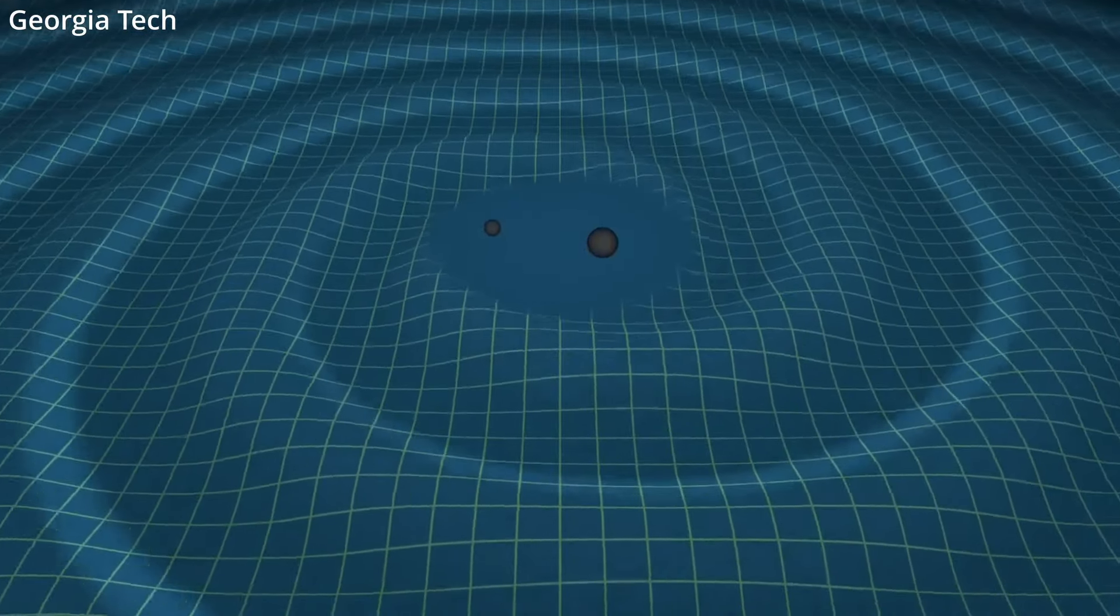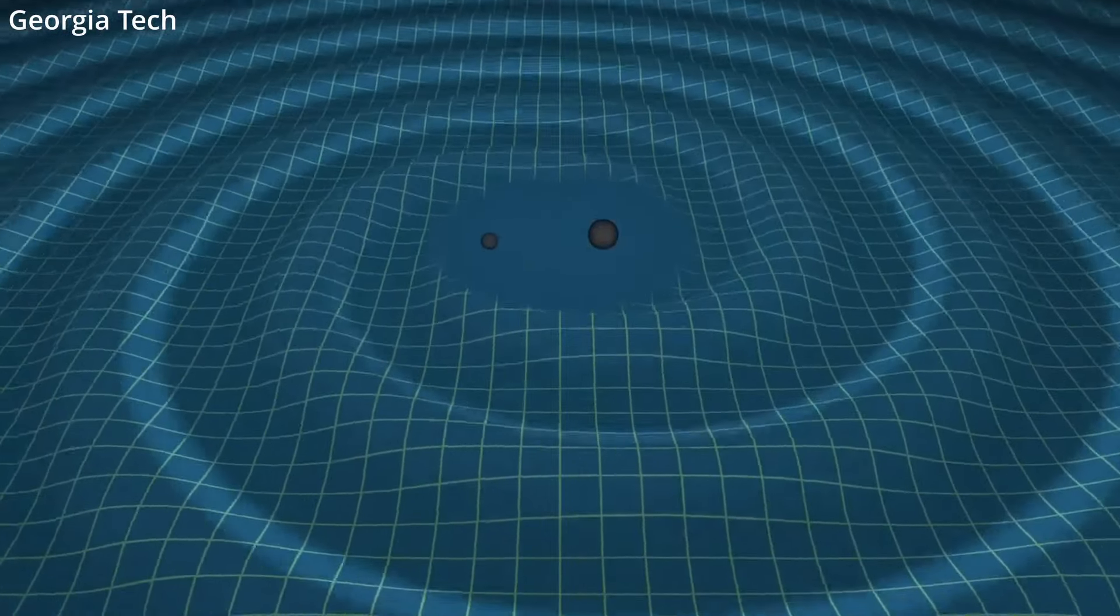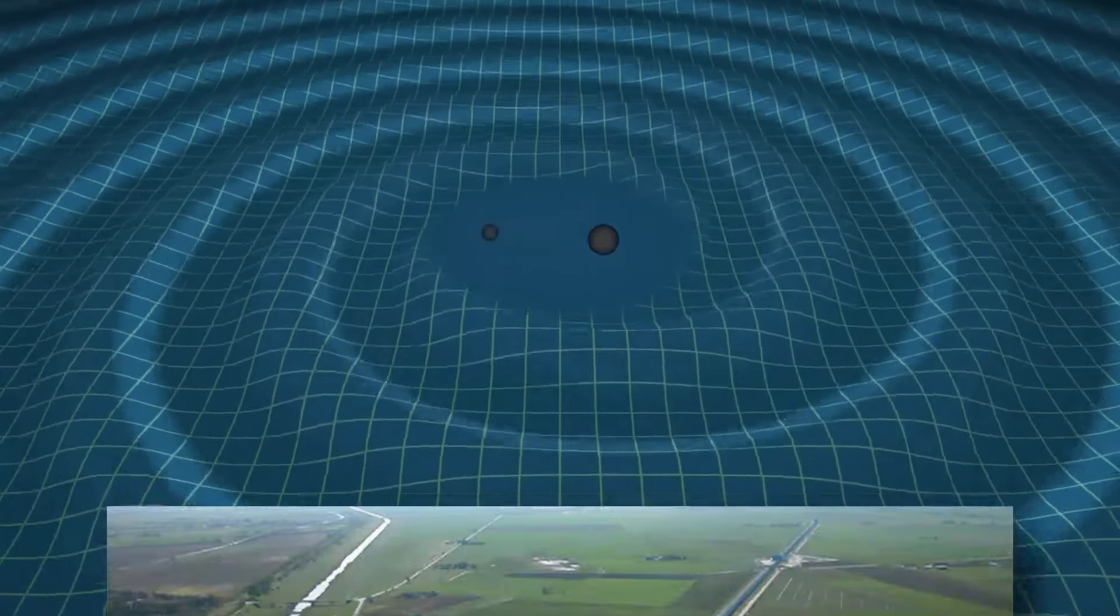Merging black holes produces gravitational waves. These are ripples in space-time which can be detected by observatories like LIGO.